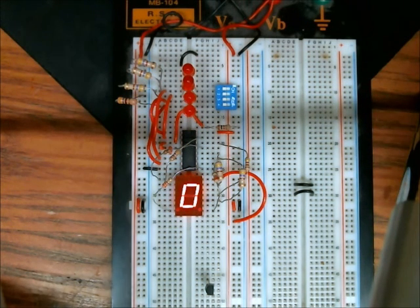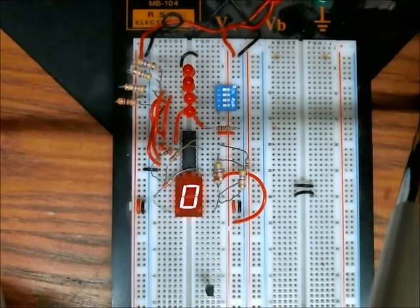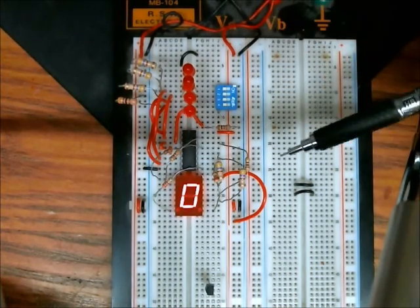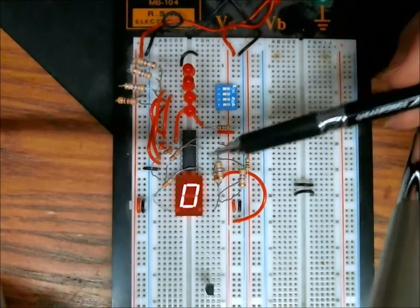So this video is about a 7447, which takes 4 binary inputs and converts them to a 7-segment display output.